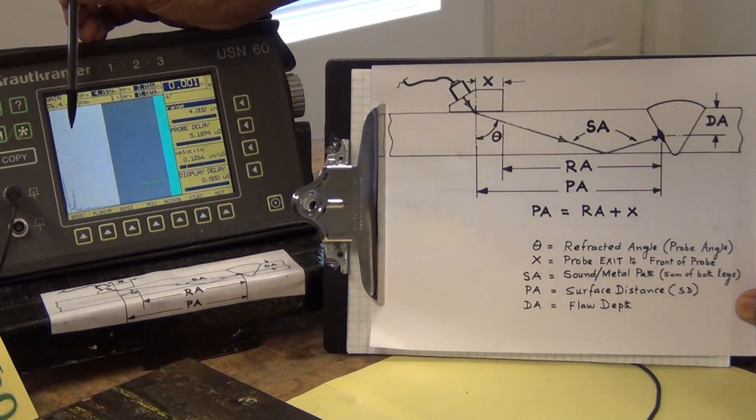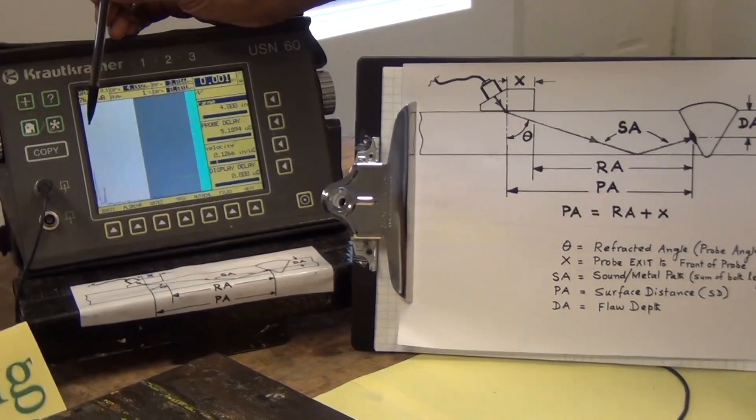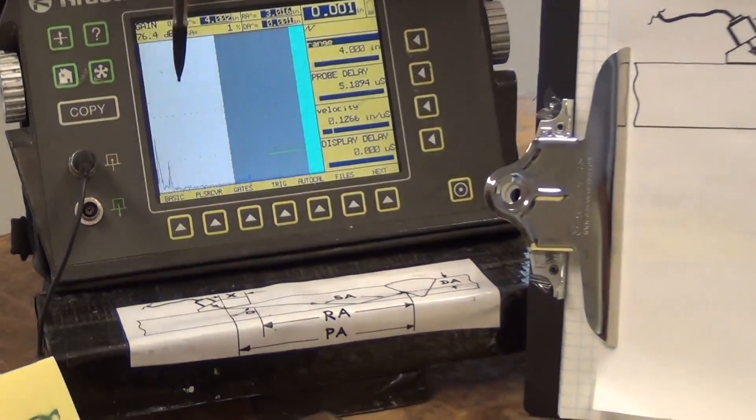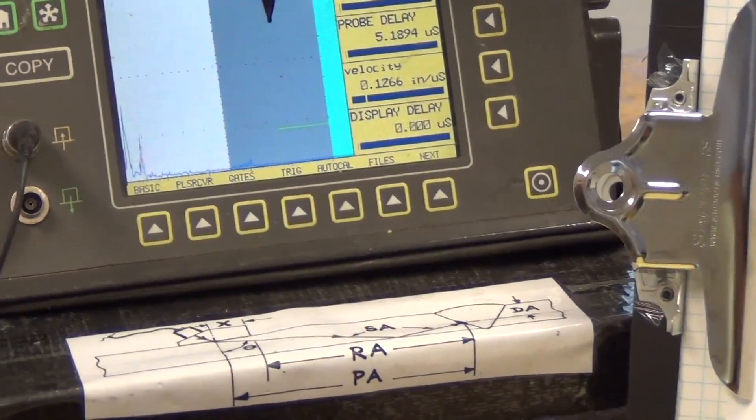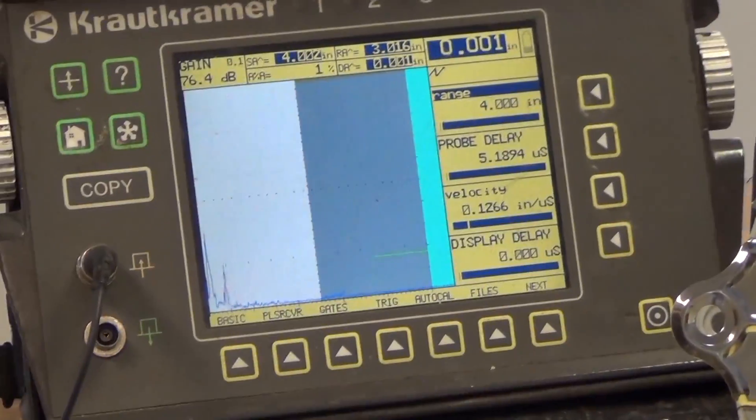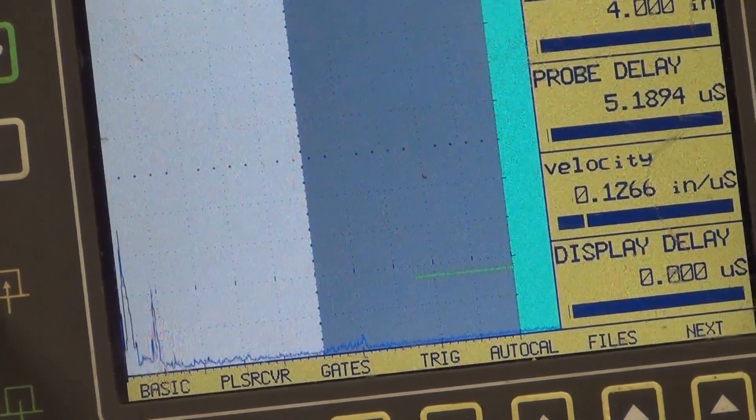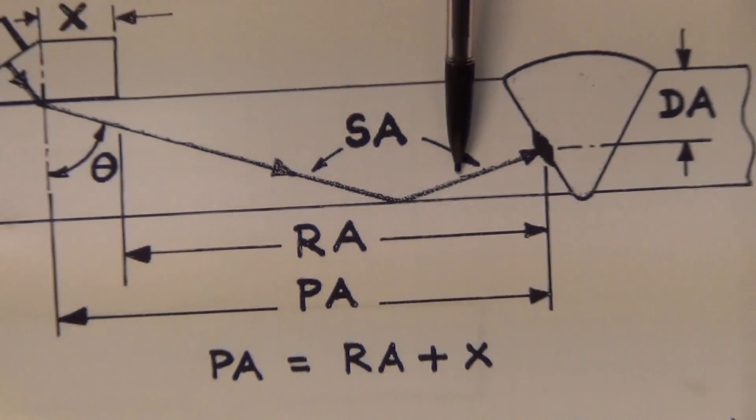You can see these different color bands. This is the first leg and this is the second leg. What does the leg mean? Right here in this diagram, this is the first leg, this is the second leg.